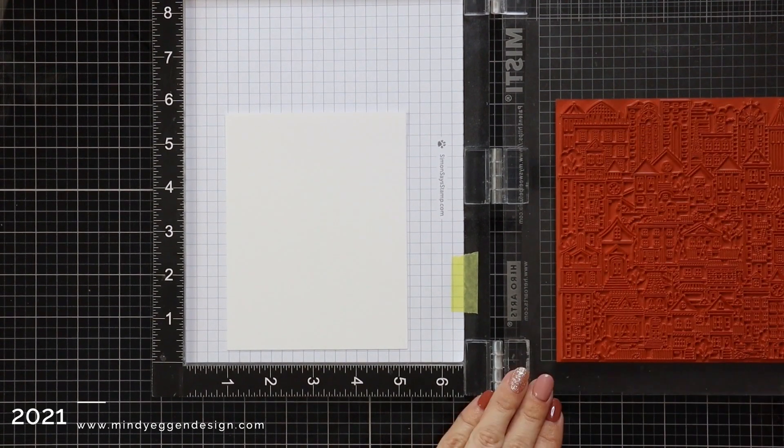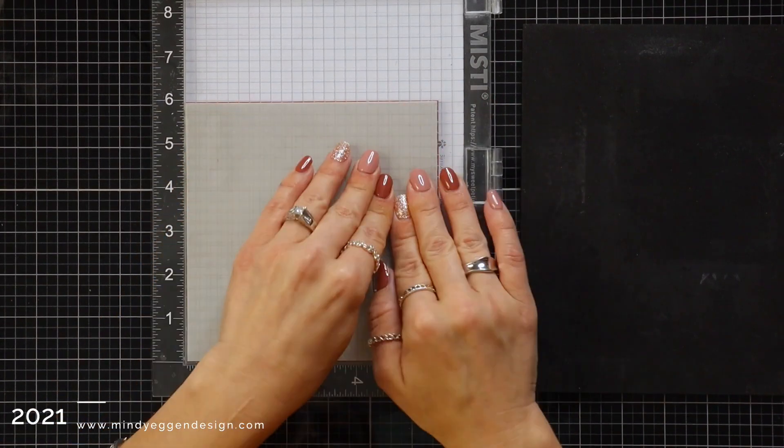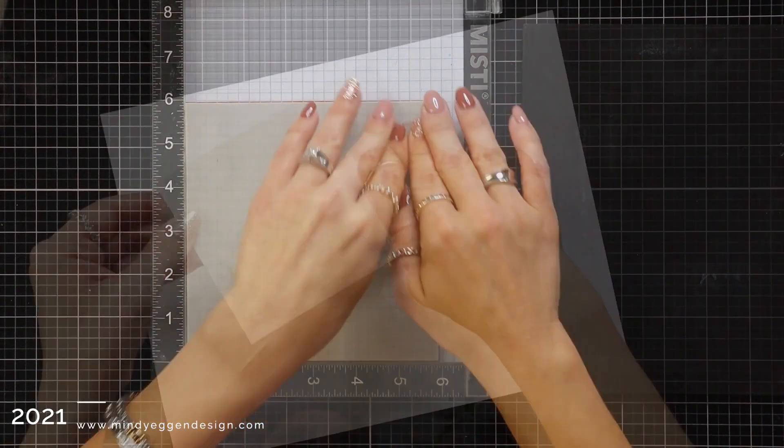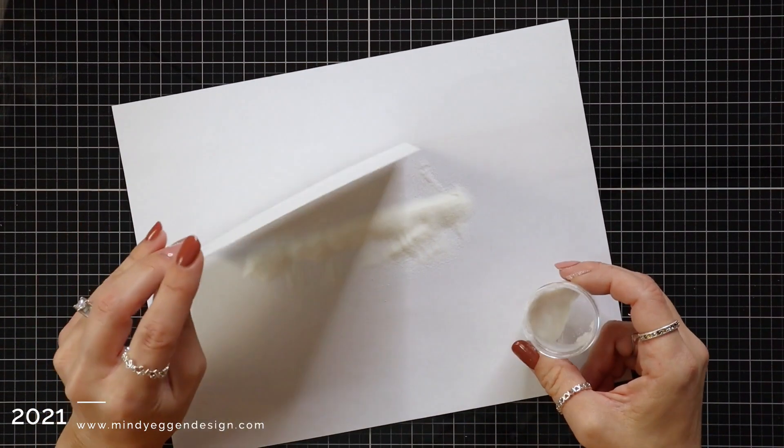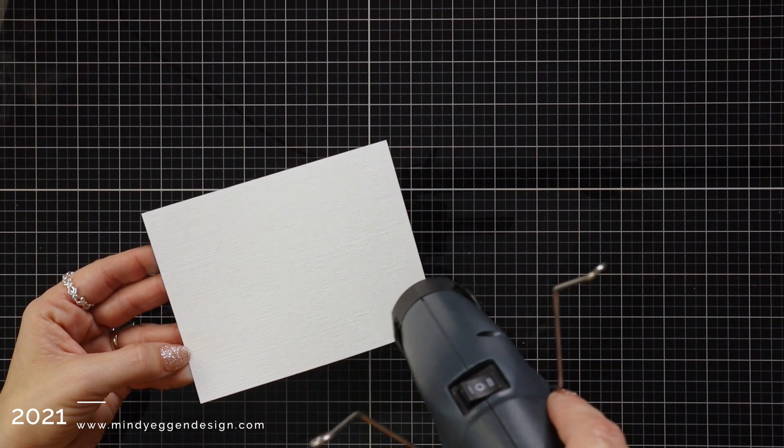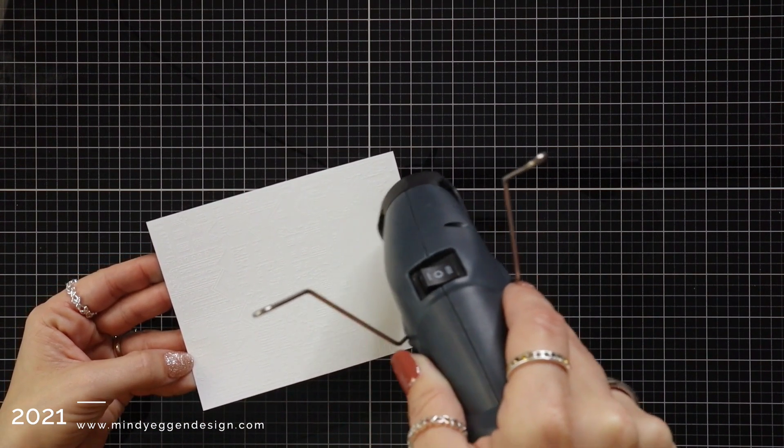I am going to stamp that twice to make sure I have everything covered. Then I'll take that over to some scratch paper and sprinkle on my clear embossing powder. This is going to trap the white of the cardstock underneath. Then I just melt that embossing powder with my heat tool.